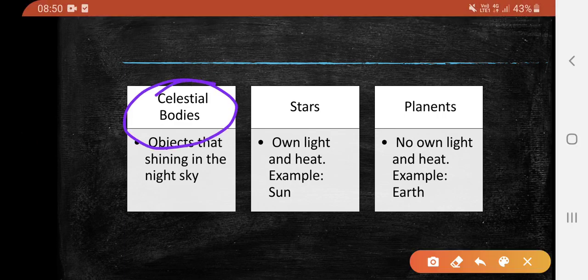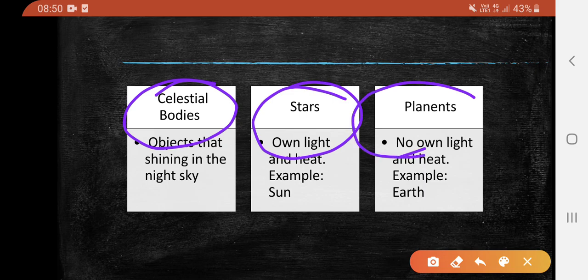The Celestial Bodies which have their own light and heat are called Stars, and the Celestial Bodies which do not have their own light and heat are called Planets.